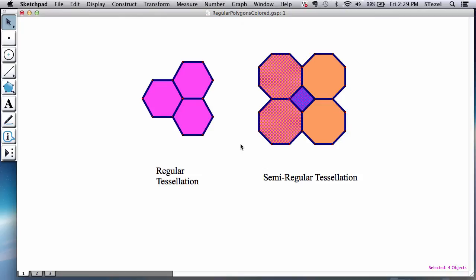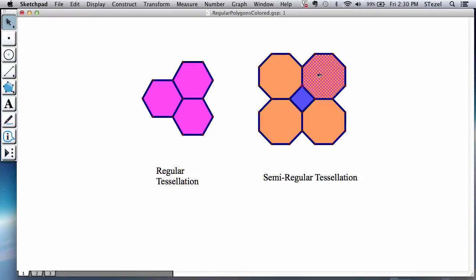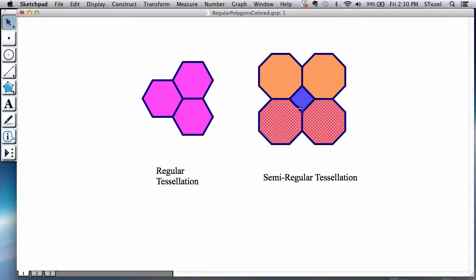One thing important about semi-regular tessellations is that every point looks the same. So if you're at this point and you look around, you're going to see two octagons and a square. That has to be repeated for every vertex that you have, so for this point again you have two octagons and a square.